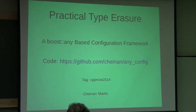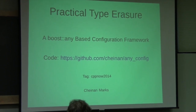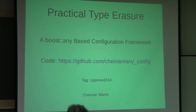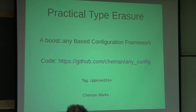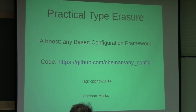First of all, this talk will not be on the cutting edge at all. On the contrary, type erasure has been around for a long time. However, this code that I'm going to show you is real production code. I developed this code for the U.S. federal government - there is no copyright, it's in the public domain. I also changed the names to make them simpler. All of the code is in GitHub, tagged with cppnow2014.